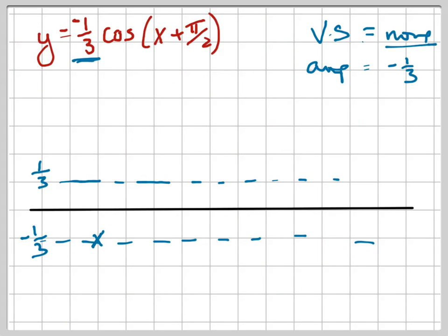The period is even easier because the B is 1 here, right? So the period equals just 2 pi, which makes it super easy.